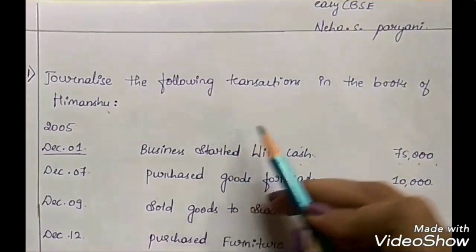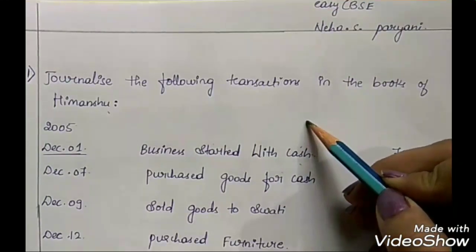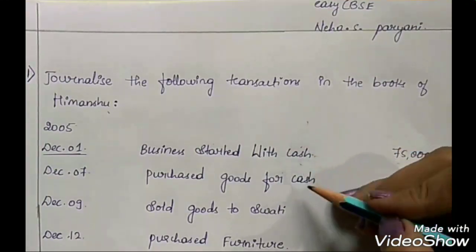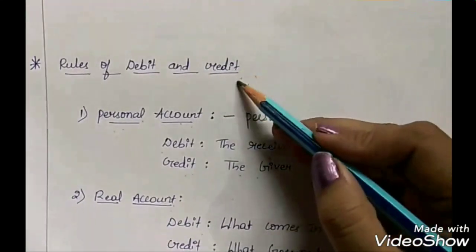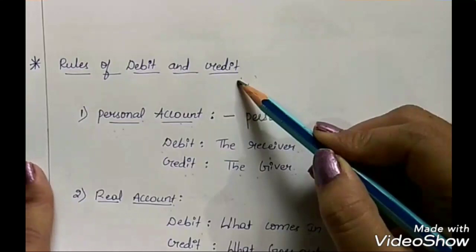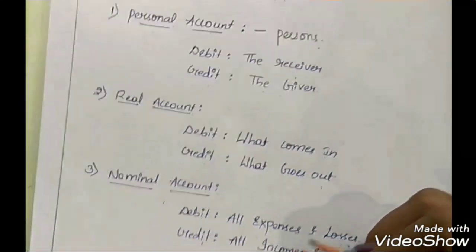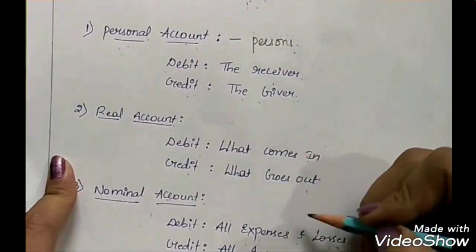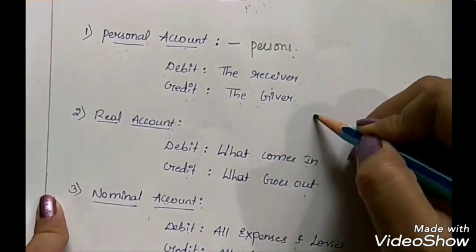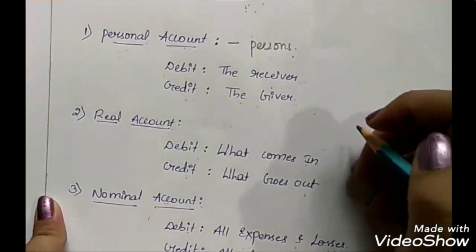Welcome back to my channel. I am Neha Pariani, and in today's session we will learn how to pass journal entries using accounting rules. In order to pass journal entries, you first need to understand the basic rules of accounting — the rules of debit and credit. For a detailed explanation, you can watch my previous video in my channel's playlist.